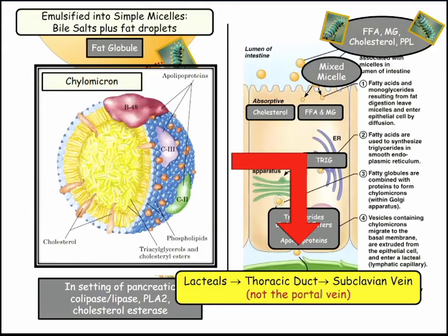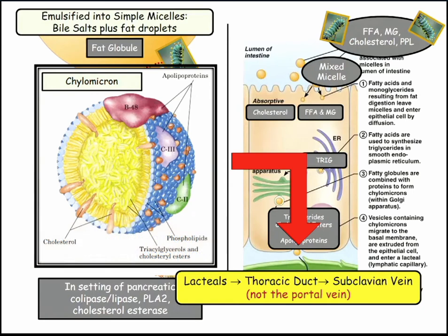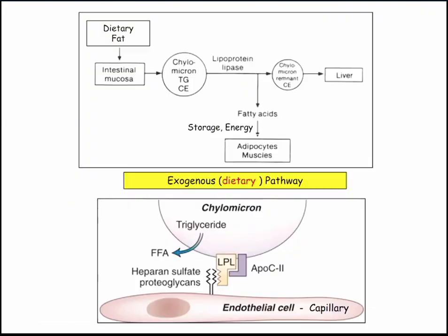So we made a chylomicron — the exogenous dietary pathway. It went through the enterocyte and got dumped into the lacteals in the thoracic duct. The key thing about the thoracic duct is it's not going to the liver — it's dumping into the subclavian vein after coursing through the mediastinum, going into the circulation for first pass through the body.